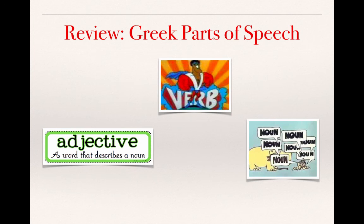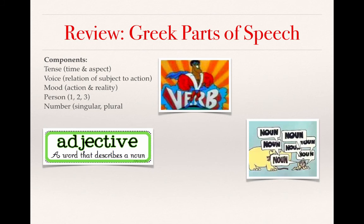Let's do a brief review of the Greek parts of speech. Up to this point, we've basically learned about nouns, verbs, and adjectives. We started with verbs, and you'll remember that verbs have five components: tense, which denotes both time and aspect; voice, which is the relation of the subject to an action; mood, which is the relationship between the action and reality; person, first, second, and third person; and number, singular or plural.